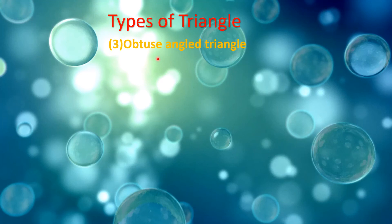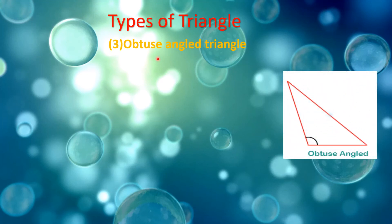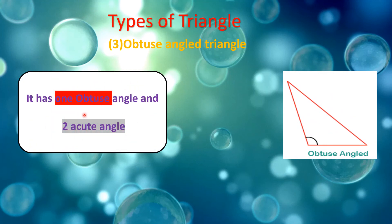Three: obtuse-angled triangle. An obtuse-angled triangle has one obtuse angle greater than 90 degrees and two acute angles, each less than 90 degrees.